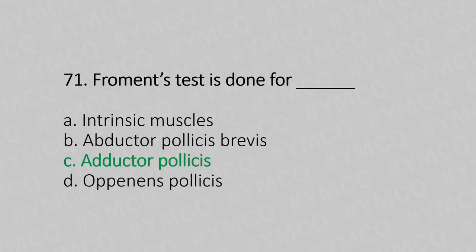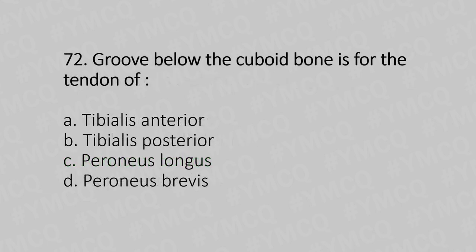Question 72: The groove below the cuboid bone is for the tendon of — Option A: tibialis anterior, Option B: tibialis posterior, Option C: peroneus longus, Option D: peroneus brevis. The answer is Option C, peroneus longus.